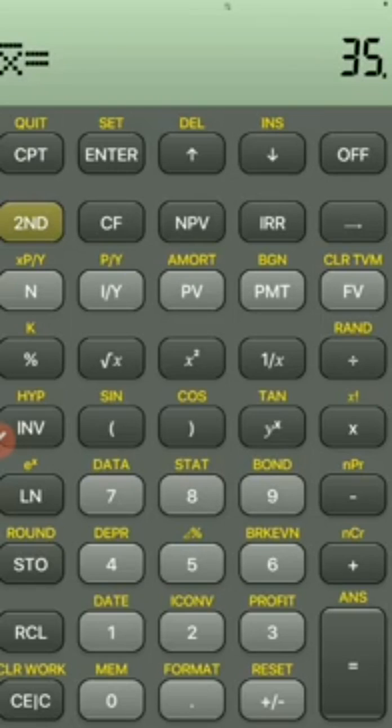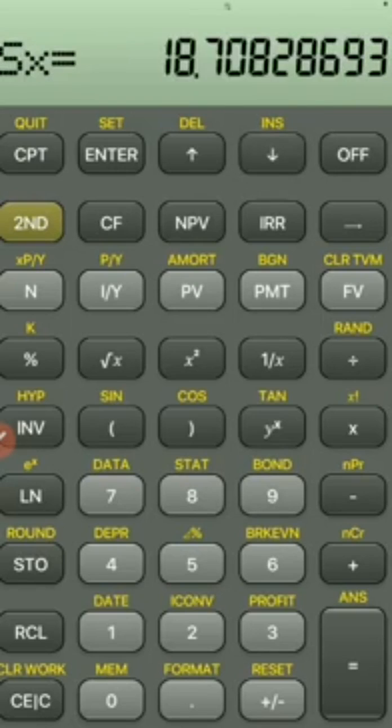X̄ is 35, which is the average. Sx (sample standard deviation) is 18.708. σx is the population standard deviation. This is how you use a Texas BA2 Plus to calculate mean and standard deviation.